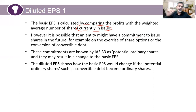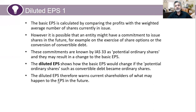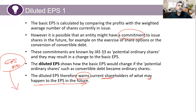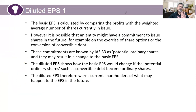Diluted EPS is based on existing plus potential ordinary shares. It warns current shareholders of what may happen to EPS in the future. Shareholders might see a basic EPS of $1.10 and be happy, not knowing there are commitments to issue new shares. After including those future shares, EPS might go down to $1.08. So it's just making an adjustment to make them aware of the situation.